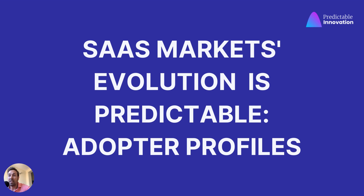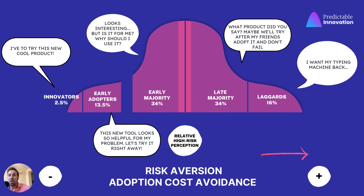Secondly, SaaS market evolution is predictable — fortunately for us — and we know the adopter profiles we can expect. This is the shape of a market category and how a technology market evolves. When we are launching a SaaS or a new technology product, we can expect five different kinds of adopters that have very different psychographic profiles, different needs, and different goals.